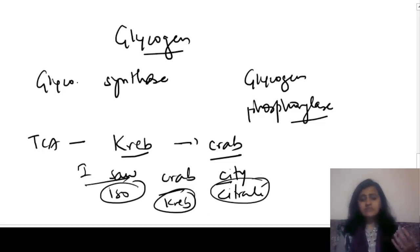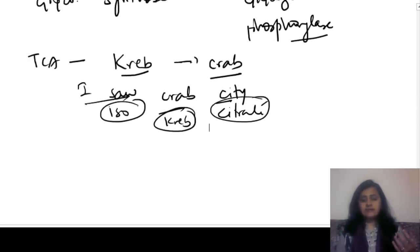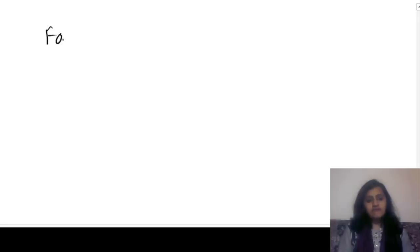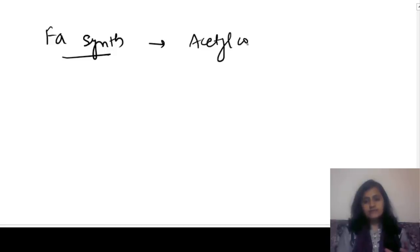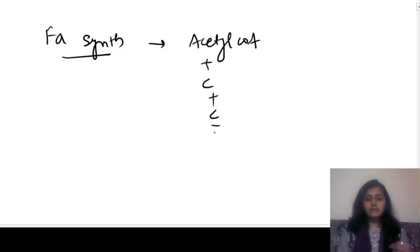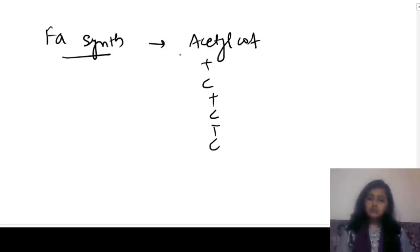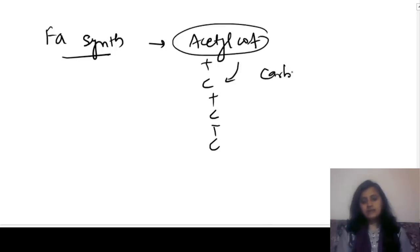For fatty acid synthesis, we know the backbone is acetyl coenzyme A, to which you keep adding carbons to form fatty acids. The rate limiting enzyme is acetyl coenzyme A carboxylase — carboxylase because it adds a carbon via carboxylation. So for fatty acid synthesis it is acetyl coenzyme A carboxylase.